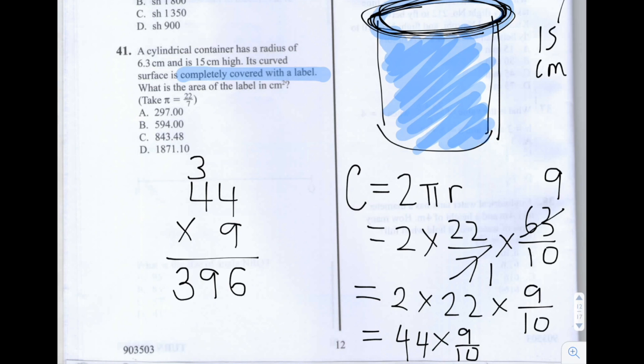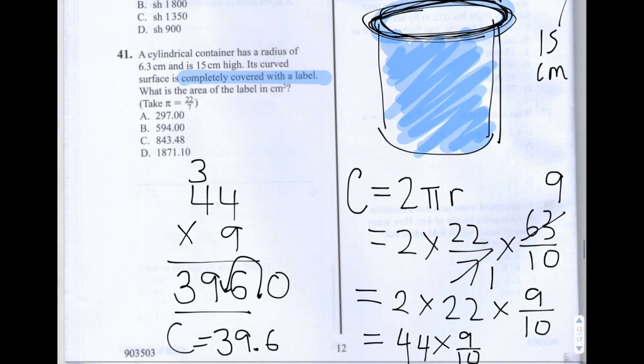So we have to divide this by 10. And when we divide this by 10, it's the same as moving the decimal place, which is originally here, one place to the left. So we get 39.6 as the circumference of this cylindrical container.